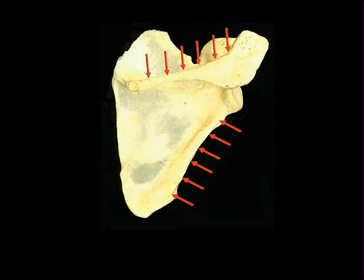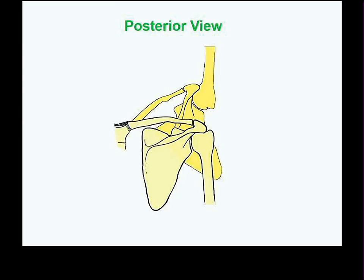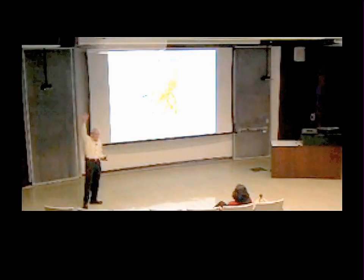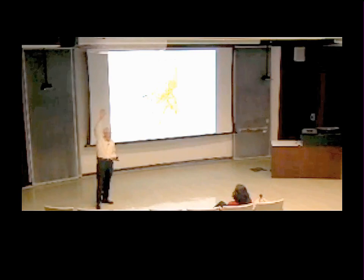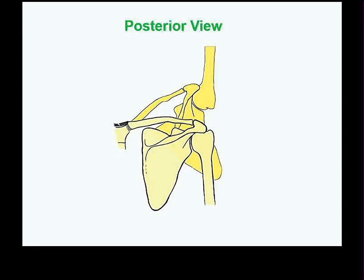Where you have really thick cortical bone in the scapula is along its spine and along its axillary border — the lateral border up against your axilla. The reason you have thick cortical bone there is because of the way the scapula moves when you elevate your arm. When you elevate your arm, you have 180 degrees of elevation — about a third of that, 60 degrees, is due to actual rotation of the scapula on your chest.